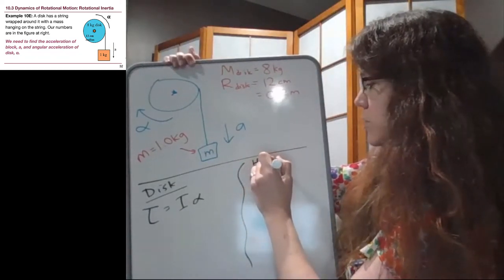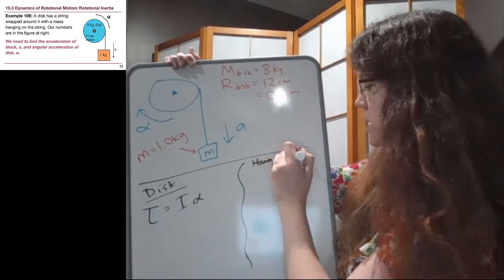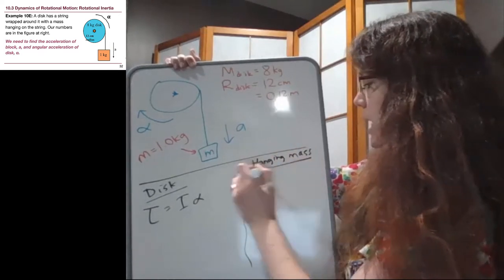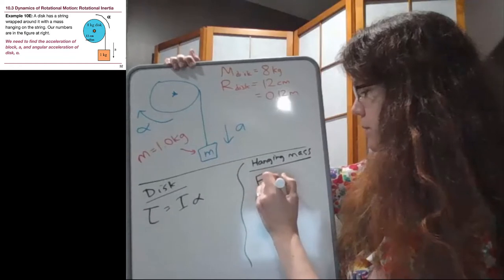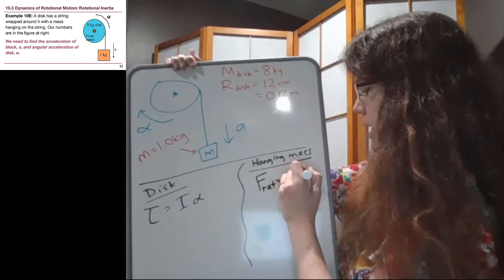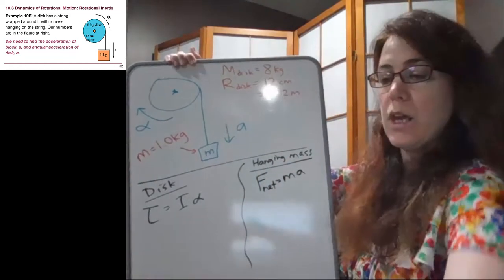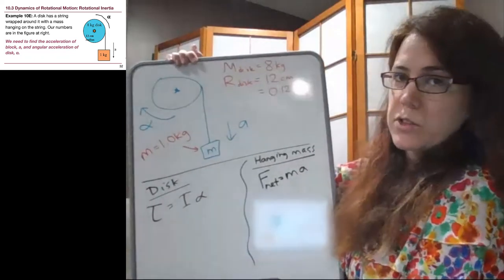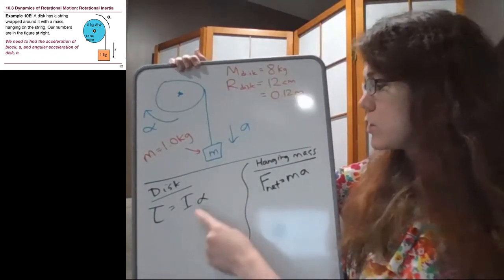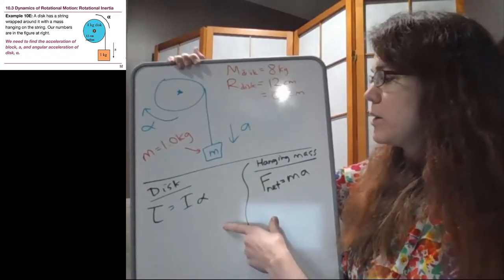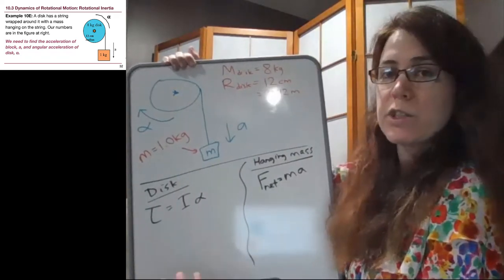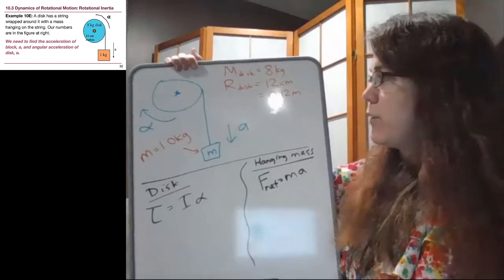the hanging mass isn't rotating, so we can't use that term. But we can think about our key idea from chapter 4, which is that f net equals ma. So the reason that this example is tougher than the couple that we've seen before now is because we're going to have several different unknowns that we have to solve for here.